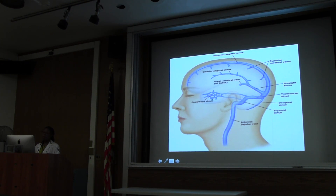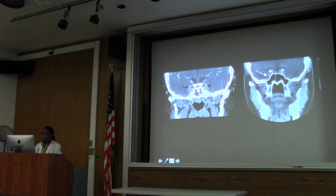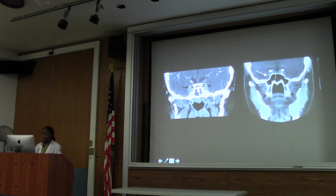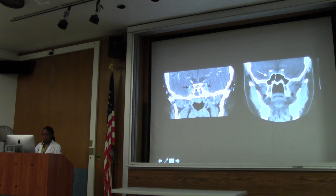A lot of infections could spread to the cavernous sinus from the head and neck, so it's important to observe that region when you look at your CTs. This is a coronal contrast image of a normal patient - here you can see it's enhancing normally. This is the cavernous sinus here. As opposed to this patient, where the low-density areas within the cavernous sinus represent clots.